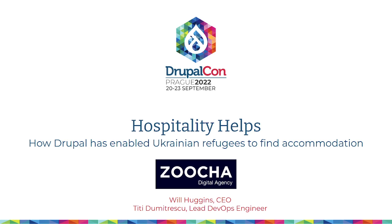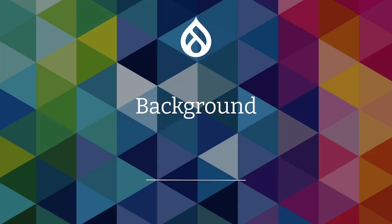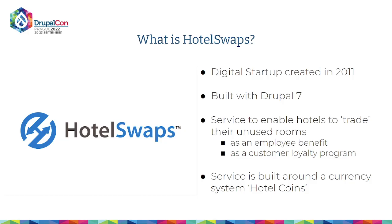It's called Hospitality Helps, and we'll explain a little bit about what that means and how we used Drupal to help refugees from Ukraine find accommodation in those first few days and weeks after the war started. Just to give you a bit of background, it all basically revolves around a website that was built in about 2011, using Drupal 7.